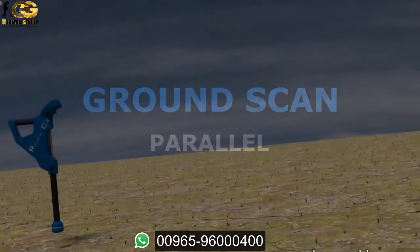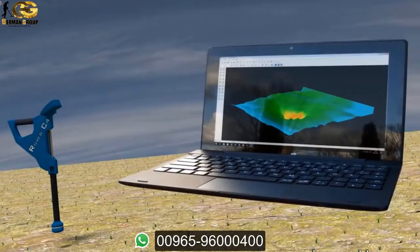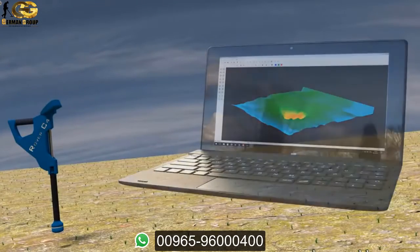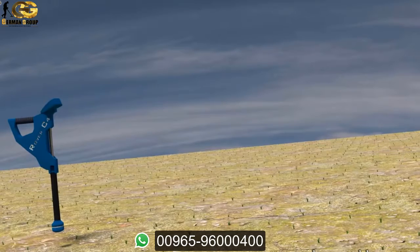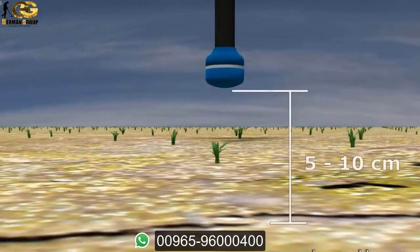The ground scan operating mode is used to create 3D graphics of the underground. Therefore the operator has to walk several paths to collect enough data. The distance between sensor and ground should be around 5 to 10 cm.